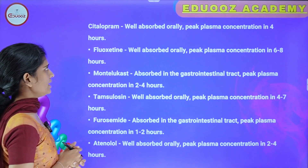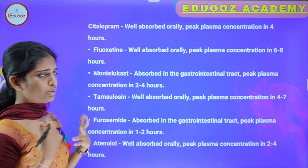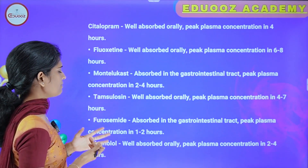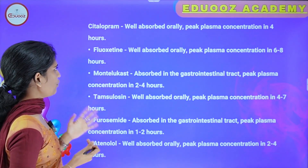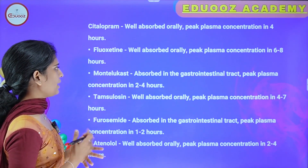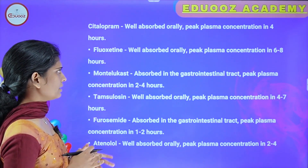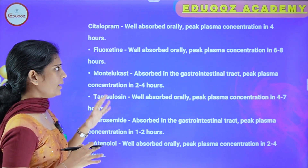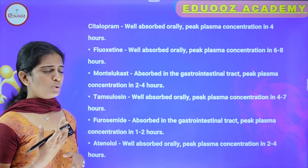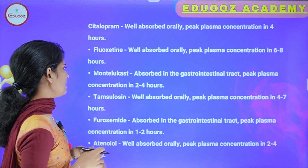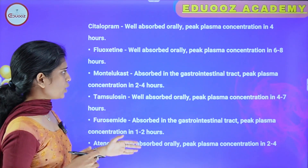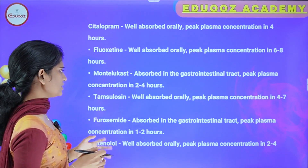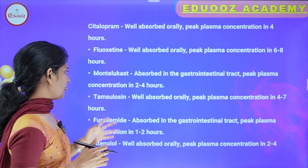Citalopram, an antidepressant drug, is well absorbed orally with peak plasma concentration in 4 hours. The next drug is well absorbed orally with peak plasma concentration in 6 to 8 hours, and another is absorbed in the gastrointestinal tract with peak plasma concentration in 2 to 4 hours.